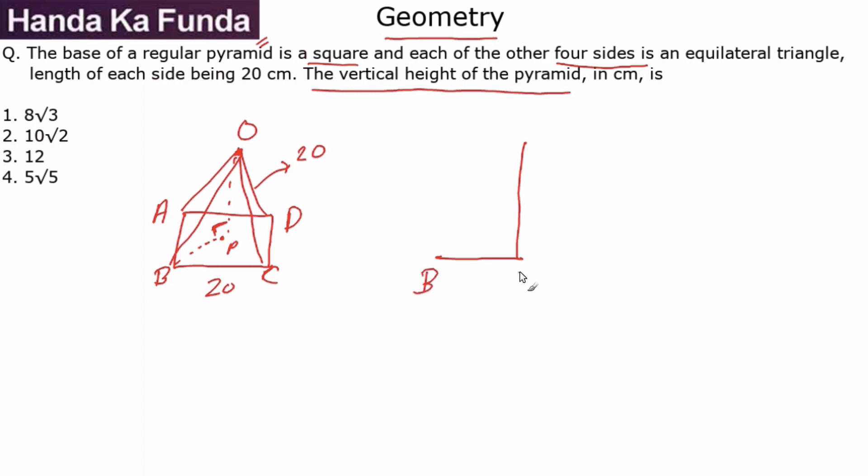So this is BP, right angle at P. OP is the height that we are trying to find out and I know that the value of OB is a side of the equilateral triangle which is 20. Once I get the value of BP I can very easily find out the value of OP.